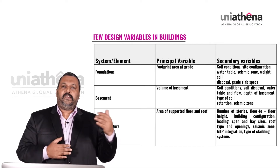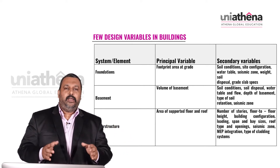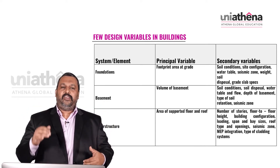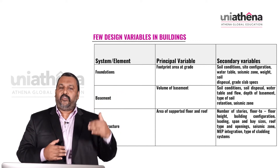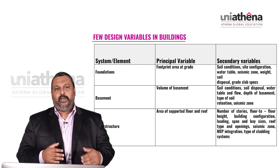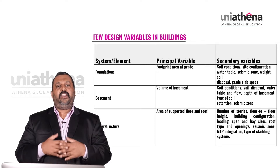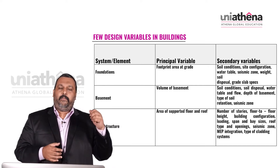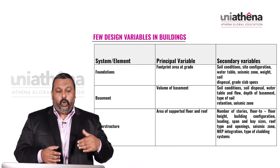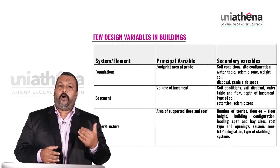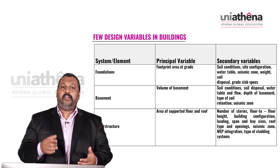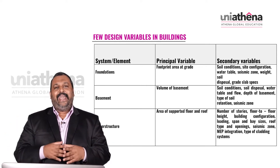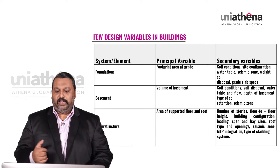For superstructure — the part of the building above ground — the principal variables are going to be the area of supported floor and the roof. Secondary variables include number of stories, floor-to-floor height, building configurations, loading, span and bay sizes, roof type and openings, seismic zone, MEP integration (mechanical, electrical, and plumbing), and type of cladding system.